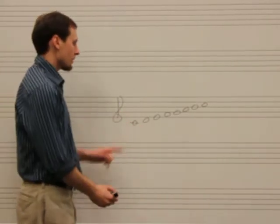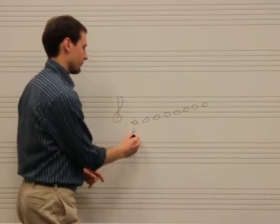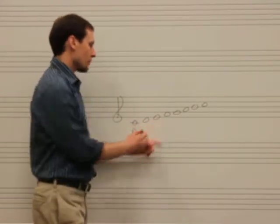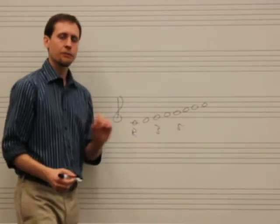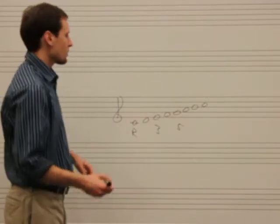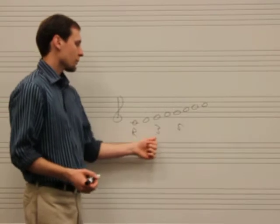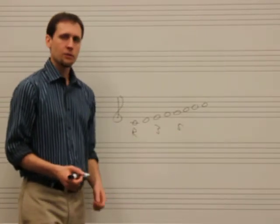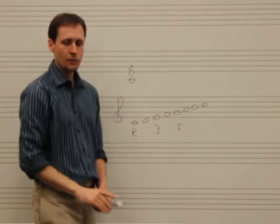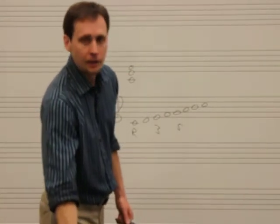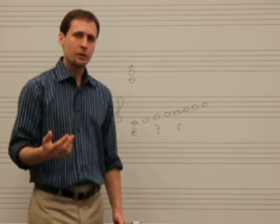To build a major triad you look at the root, the third, and the fifth. The root is simply the first note of the scale, so to build a triad we're looking at the root, third, and fifth, and this creates the major chord.